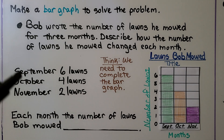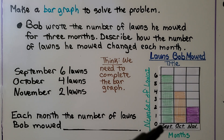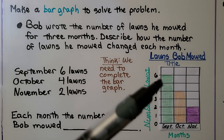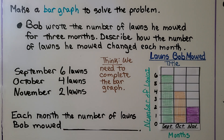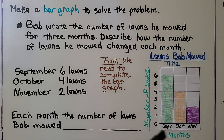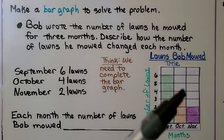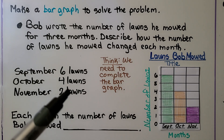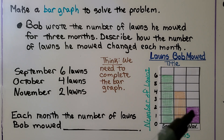I started by drawing September at 6 lawns — I drew the bar up to the number 6 and colored it in. We can choose any colors we want as long as they're different. For October, that's 4 lawns, so I colored the bar up to the number 4 on the scale. November is 2 lawns, so I colored the bar up to the number 2 on the scale.